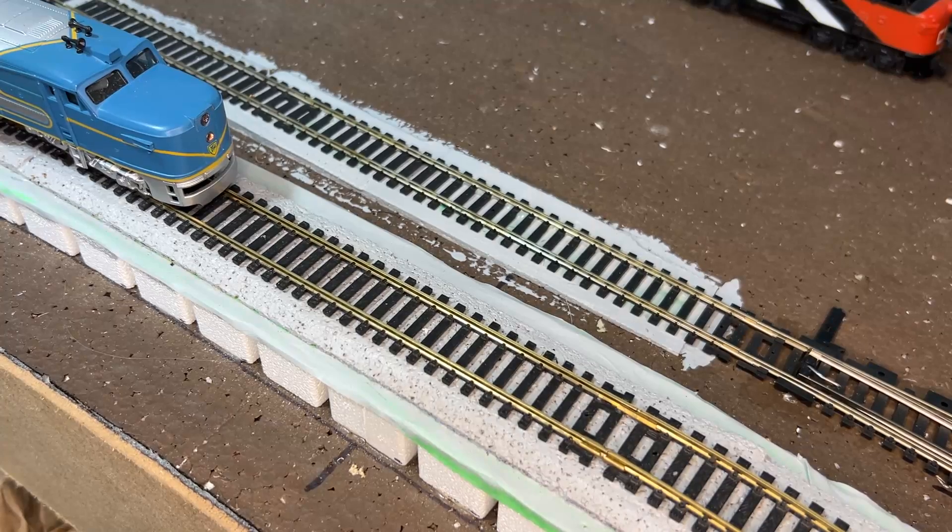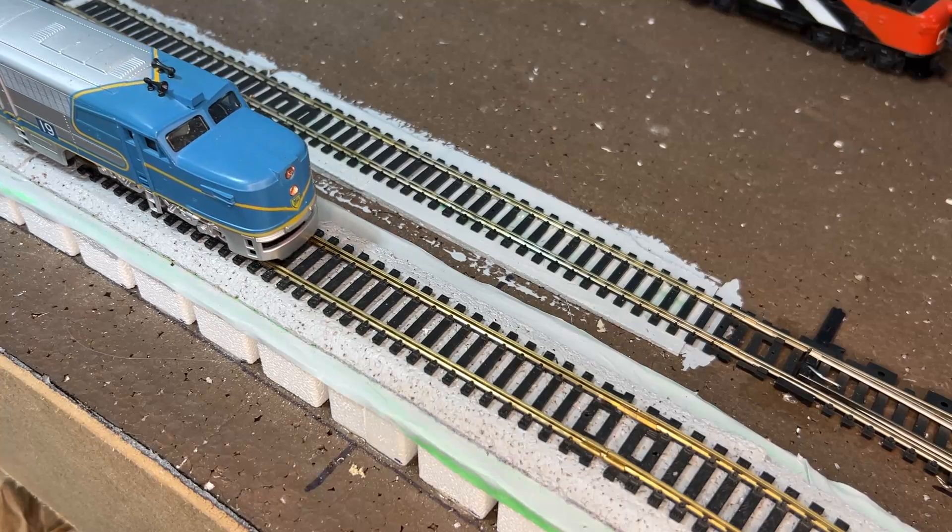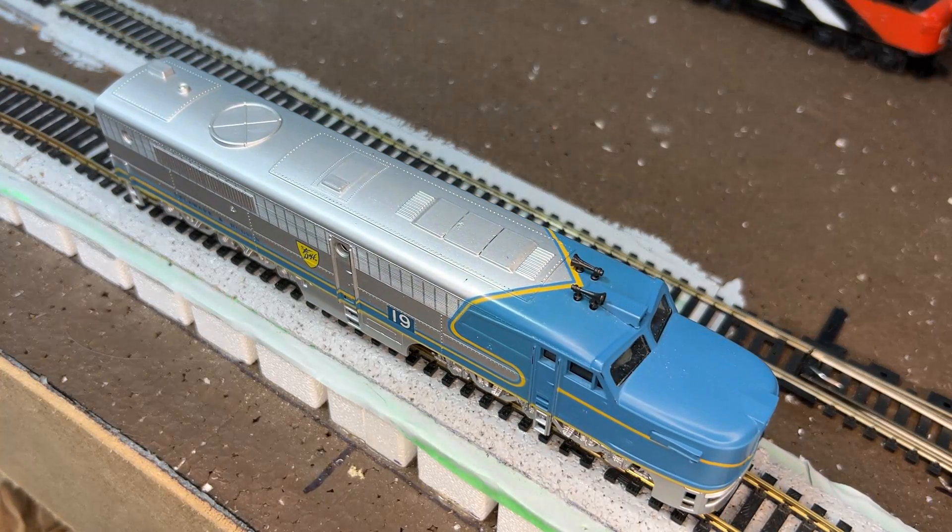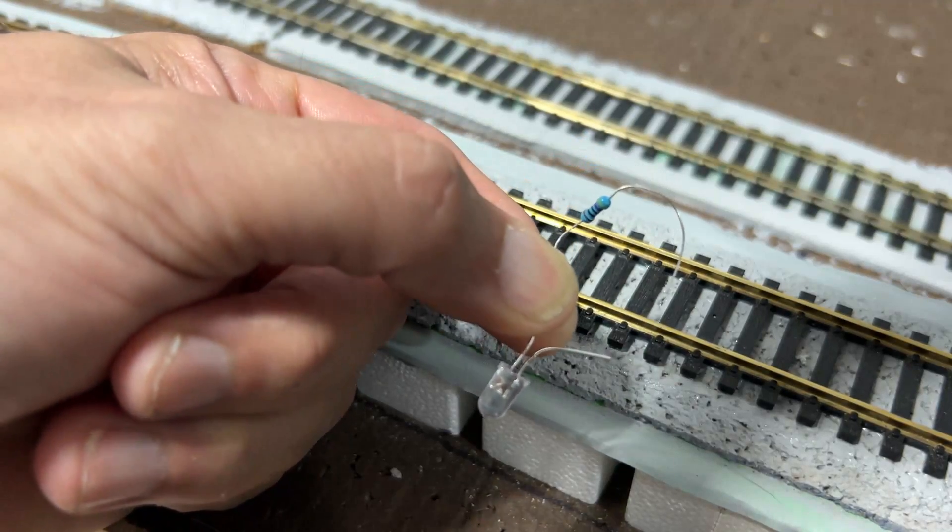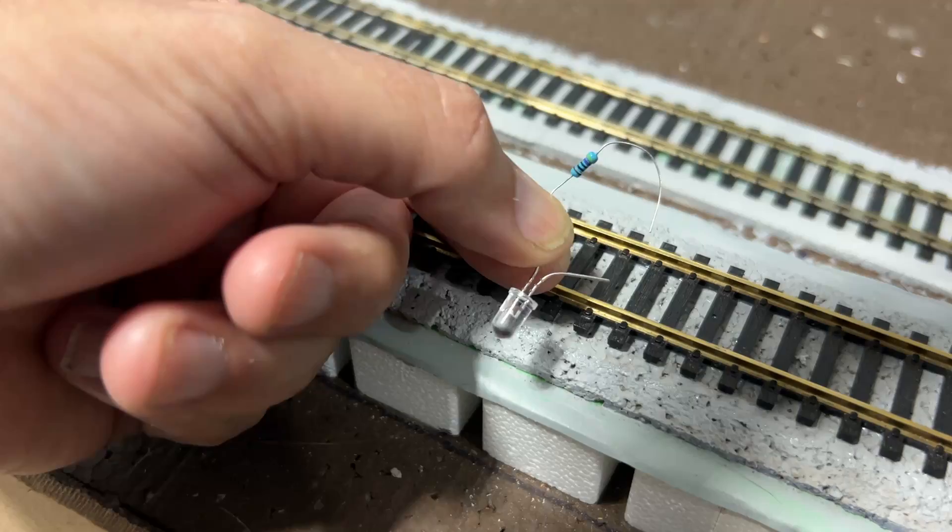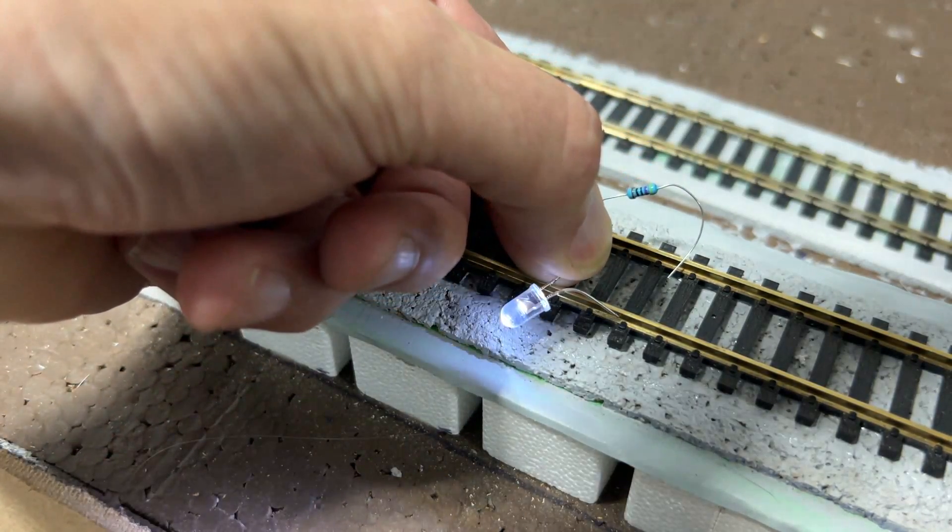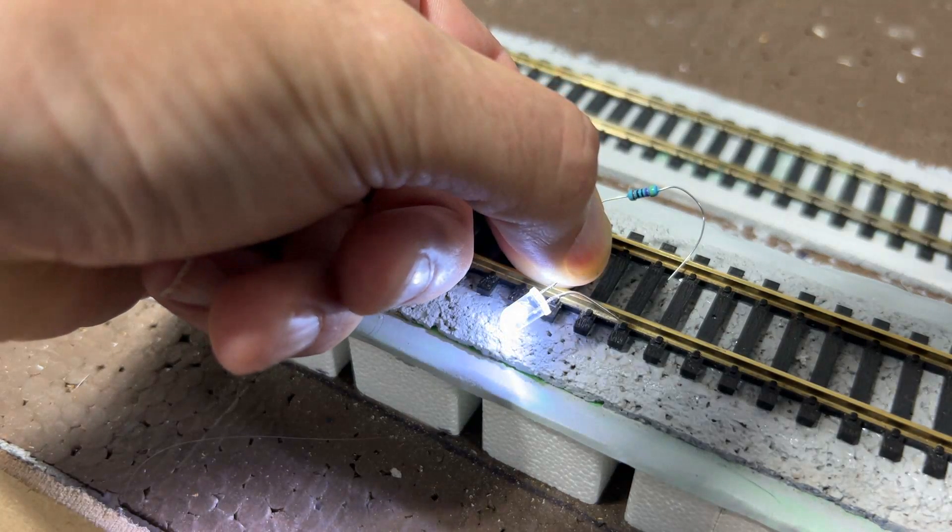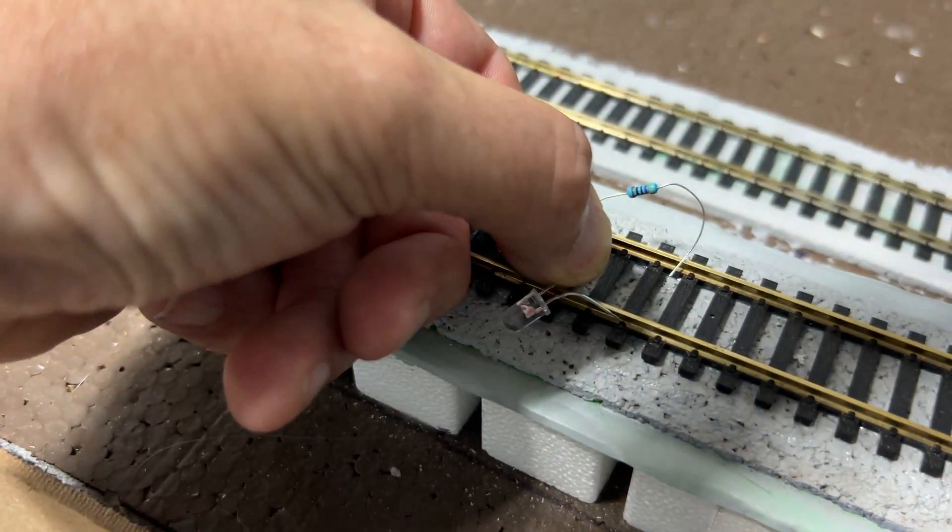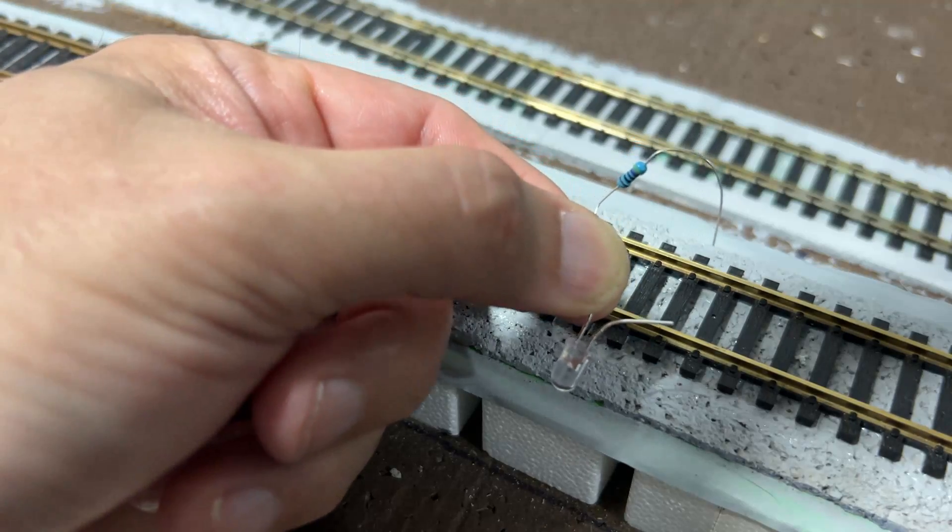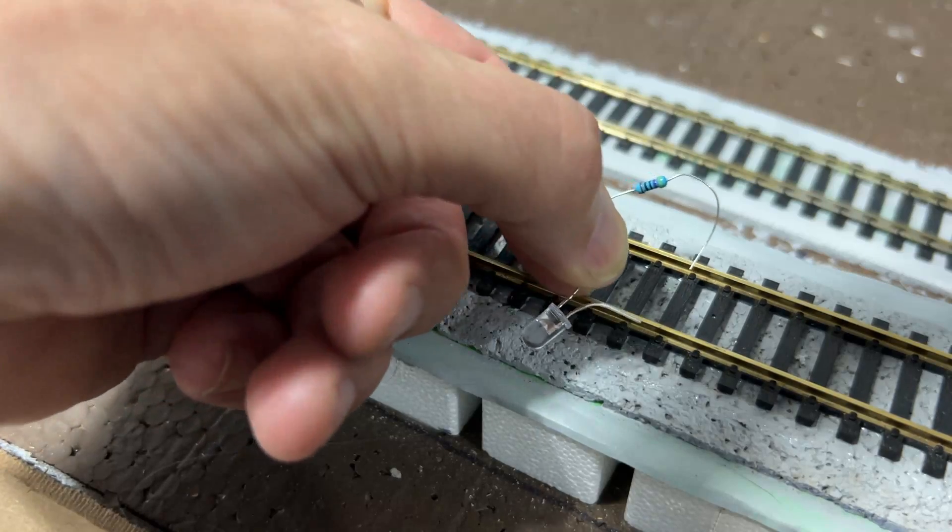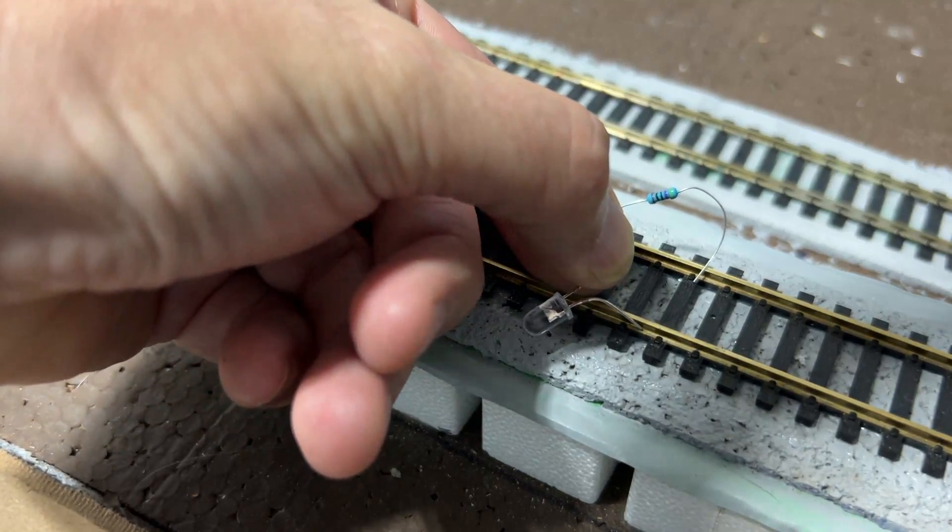When you flick the forward/reverse switch on your controller, all you're really doing is reversing polarity. Now what you might notice here is if you look at the headlight on the loco, it's lighting up when we're going forwards and when I switch it into reverse, the light is still on. Unfortunately, this won't work for an LED bulb.